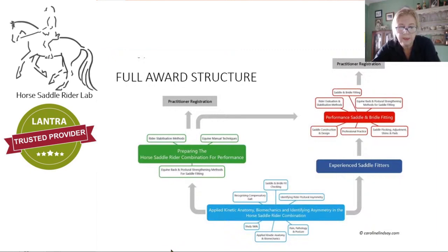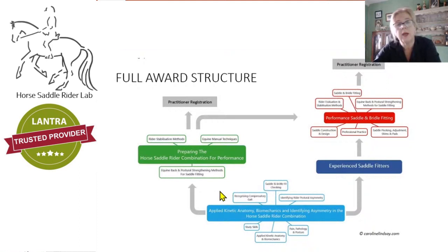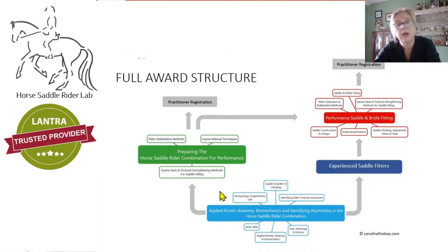We can see the different modules. We'll start with Study Skills, then go into Applied Kinetic Anatomy and Biomechanics, then Pain Pathology and Posture or Compensatory Gait in the Horse. We'll be identifying Rider Postural Asymmetry and doing some Saddle and Bridle Fit Checking as well. I'll show you what that sheet looks like in a moment — it's quite detailed.